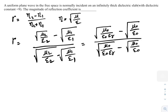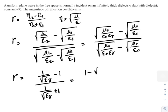Dividing both numerator and denominator with root over mu o by epsilon o will give you gamma equal to 1 by root epsilon r minus 1 by 1 by root epsilon r plus 1.